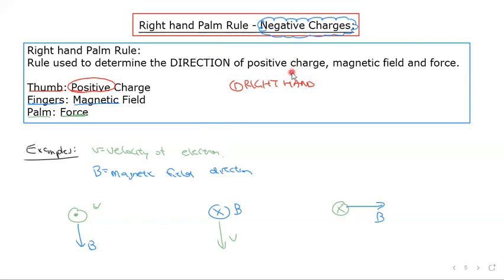Therefore it's not going to go the same way as the right-hand palm rule will predict if you don't account for the fact it's negative. If you use the right-hand palm rule focusing on positive charge and treat the electron the same way, you'll get the wrong answer. You'll either need to switch to the left hand, or always use your right hand but remember to switch your answer.